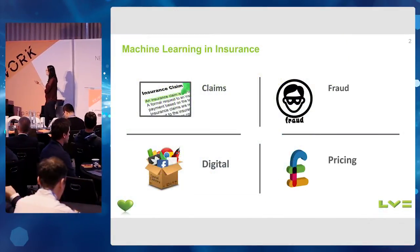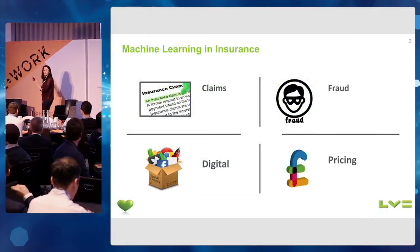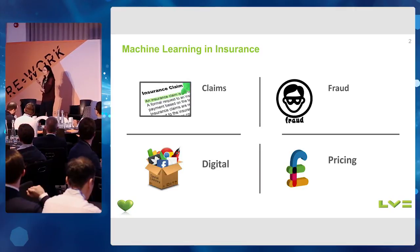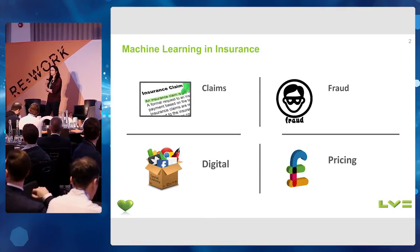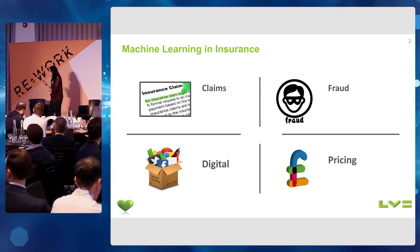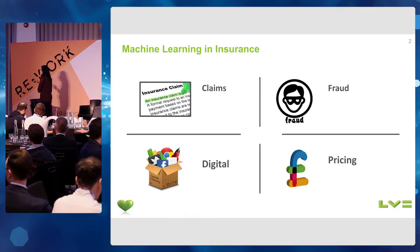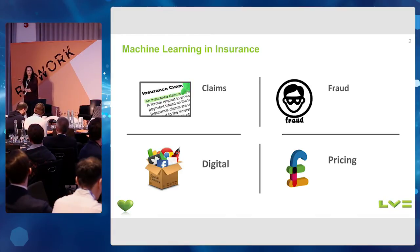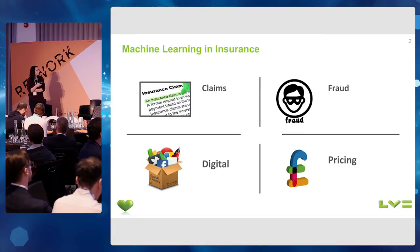In fact, in insurance, there are many areas where we can use machine learning to improve the decisions that we make and allow some type of automation, like for example claims handling and fraud prevention and also digital and marketing, as well as pricing, just to name a few.